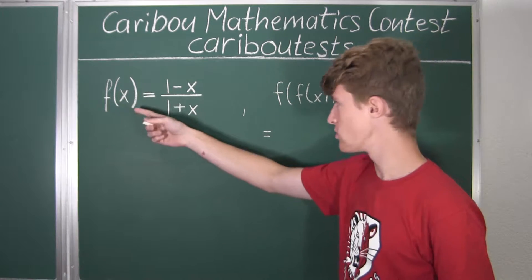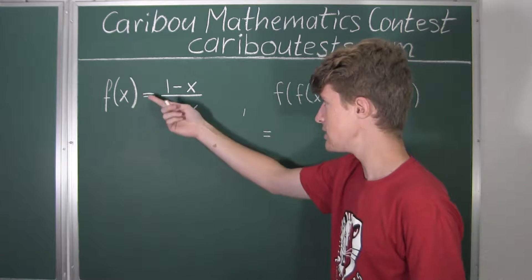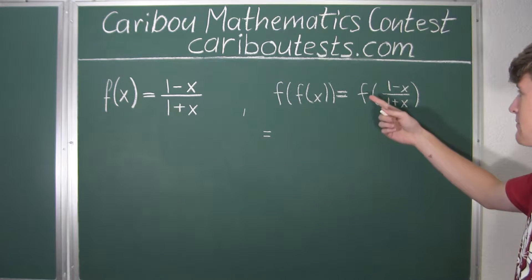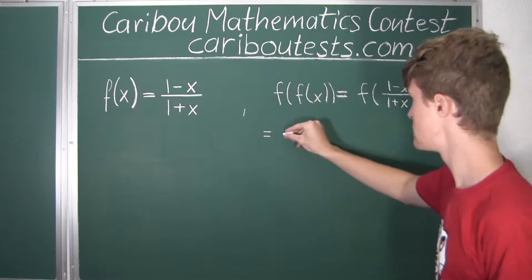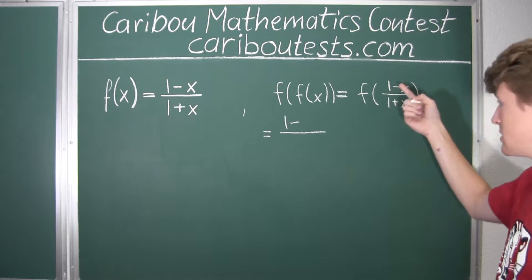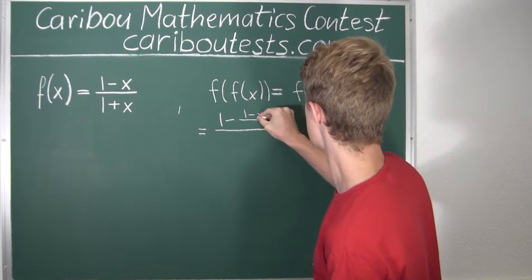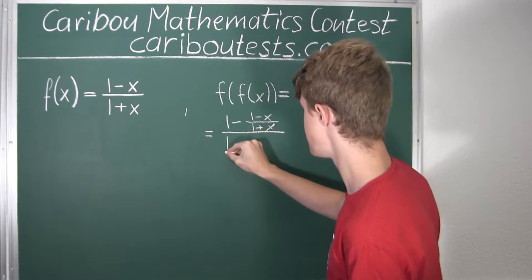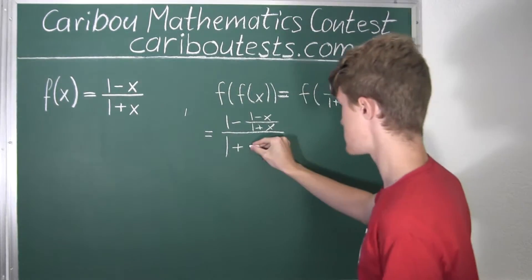Let's look at the original formula for f of x. The function of an argument is equal to 1 minus the argument divided by 1 plus the argument. So what we have is 1 minus the argument — which here is this fraction — in the numerator. And in the denominator, we still have 1 plus the argument, but the argument isn't x, it is this fraction. So again, we will write this fraction.